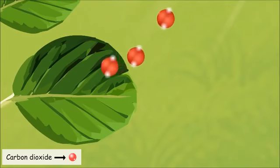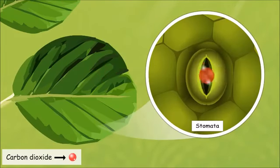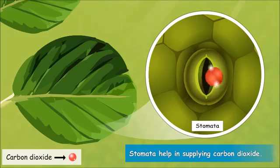To take carbon dioxide from air, there are stomata. Stomata are the minute openings present on the lower surface of the leaves. Through stomata, carbon dioxide moves inside the leaves.